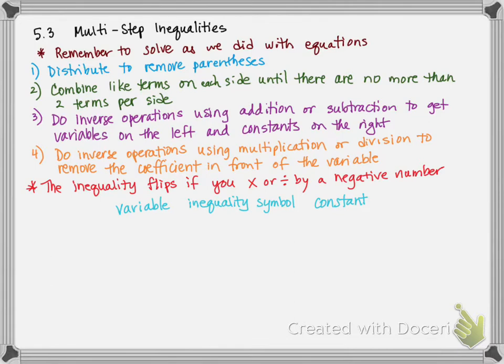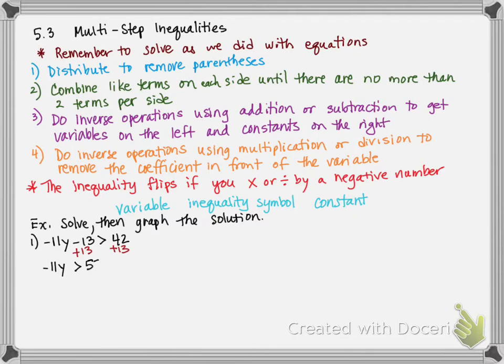I think I might be able to fit some on here. It says solve, then graph the solution. So, we're going to do a number line graph. And just to let you know, we are not doing a quiz in this chapter. So, what we have here is negative 11y minus 13 is greater than 42. All the y's are on the left, which means I'm going to add 13 to both sides to get the constants on the right. That gives me negative 11y is greater than, and I get 55.